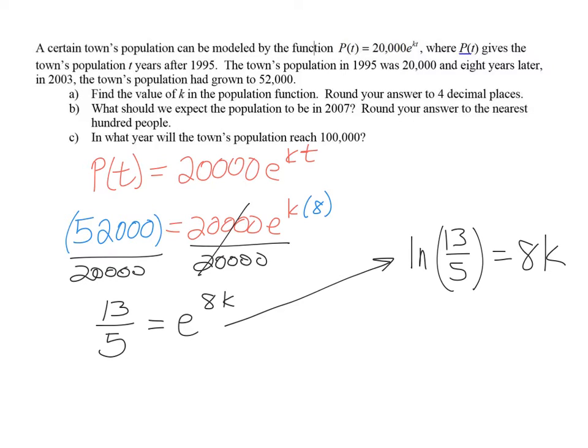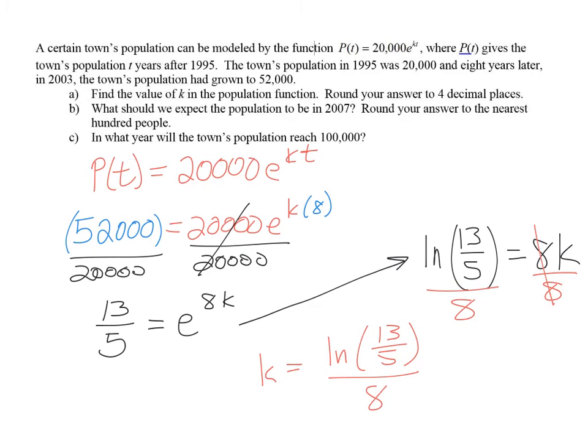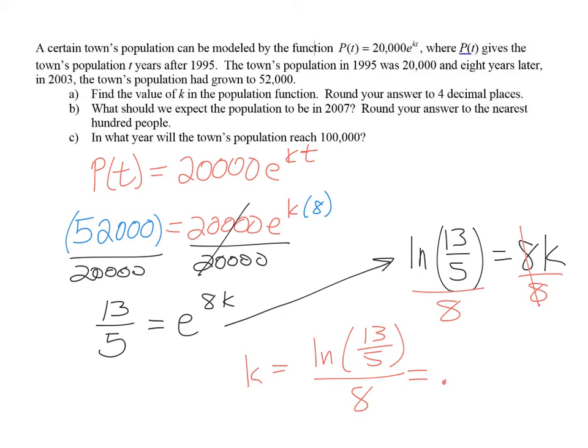Now the last thing we need to do is isolate k by dividing everything by 8. So we have k equals natural log of 13 over 5, all of that divided by 8. We need to represent this as a decimal, so using your calculator, you'll find this equals 0.1194.